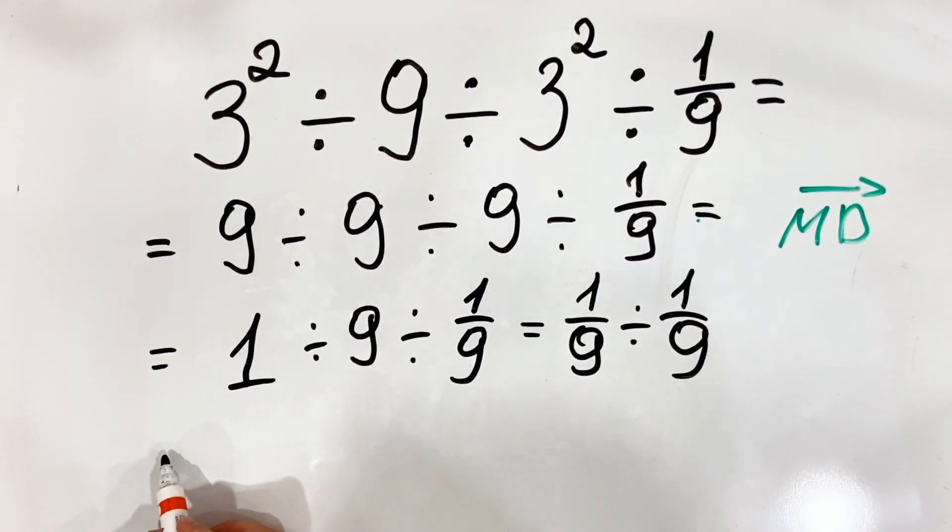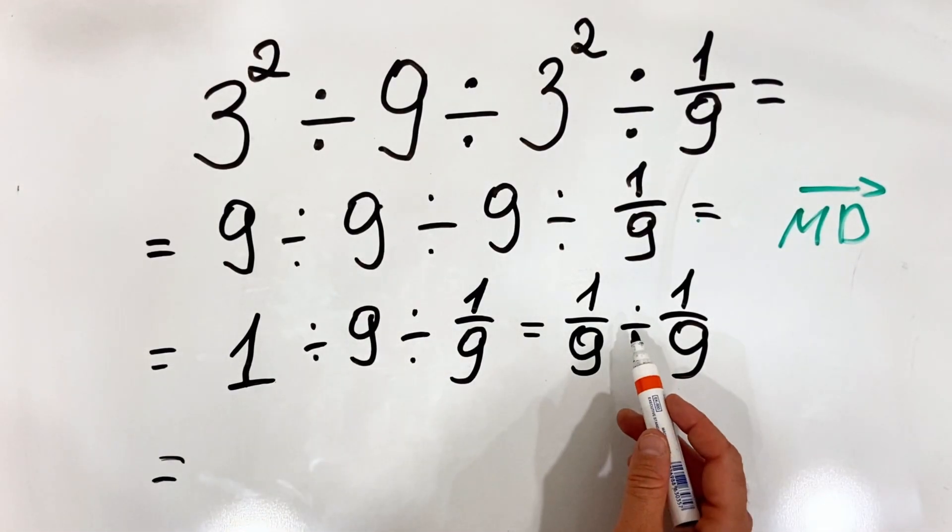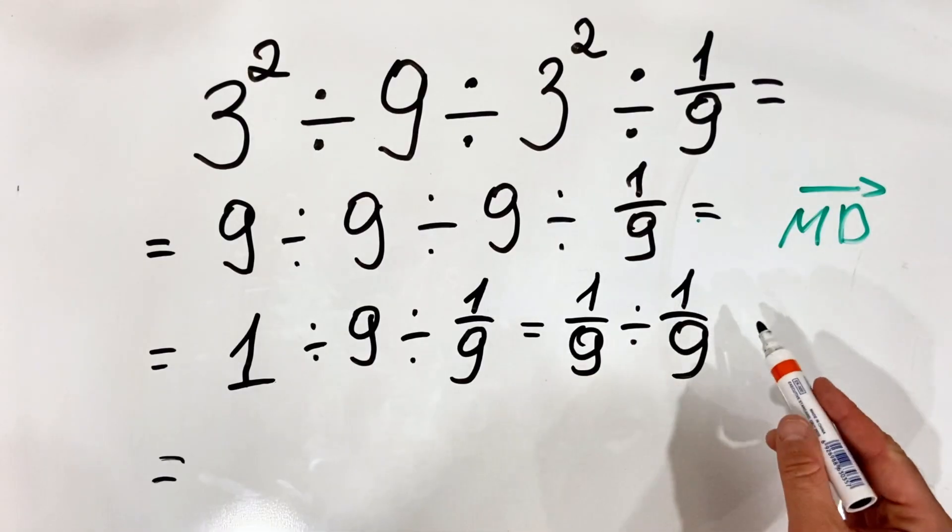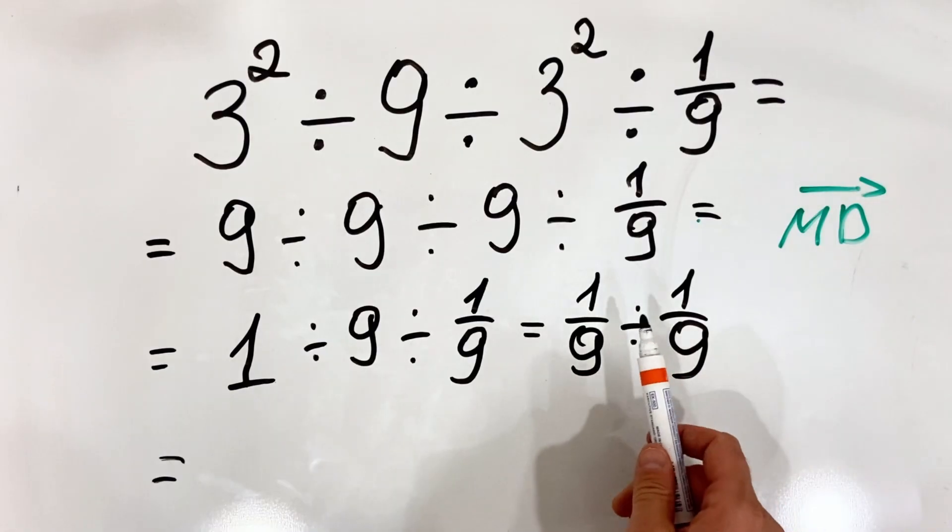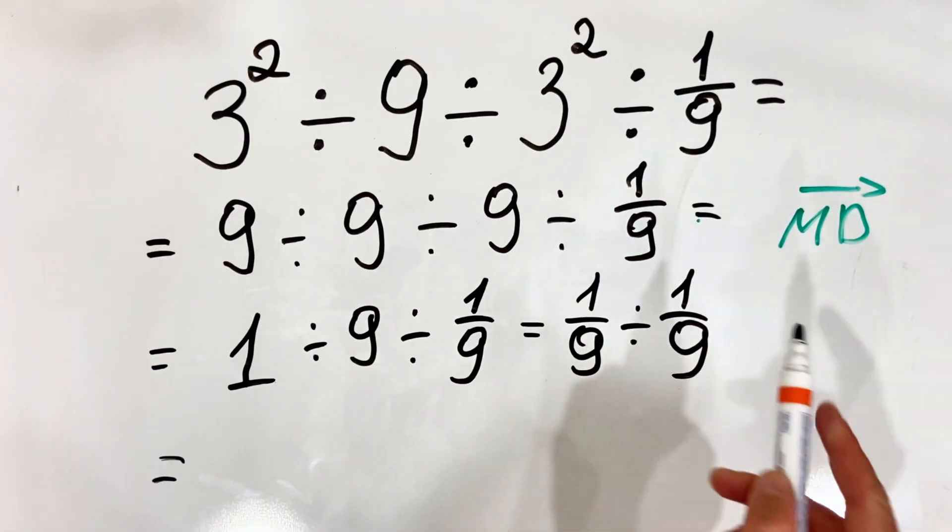You must remember that when you have a division of a fraction, you multiply by its reciprocal. So in this case, 1 ninth multiplied by 9.